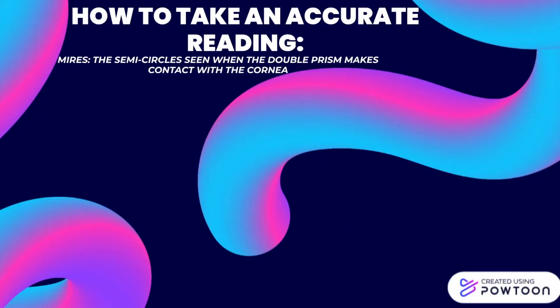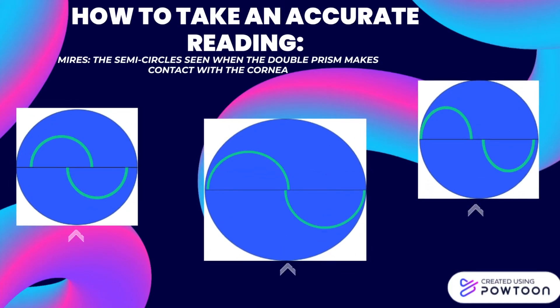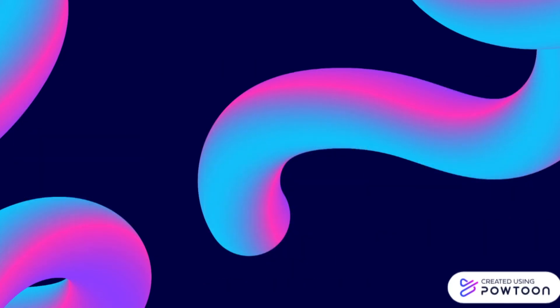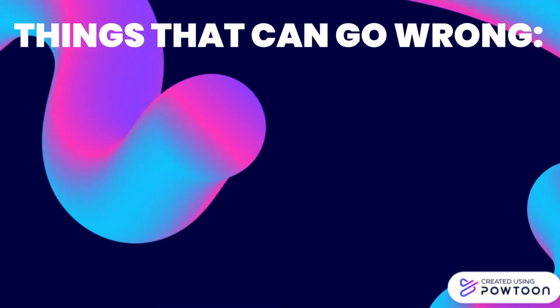When the prism makes contact with the patient's cornea, two semicircles of a green-yellow colour will be seen against a blue background; these are called mires. When taking an intraocular pressure measurement, we want to aim to have the inner margins of both mires only just touching for the most accurate reading, and we use the pressure dial to adjust the positioning. When the mires are too far inside each other, the dial pressure is too high and you need to turn it down. If the mires appear completely separate and away from each other, the dial pressure is too low and needs to be increased. Mires are a different colour because of the uptake of the fluorescein dye, and therefore having too much or not enough dye can be problematic.